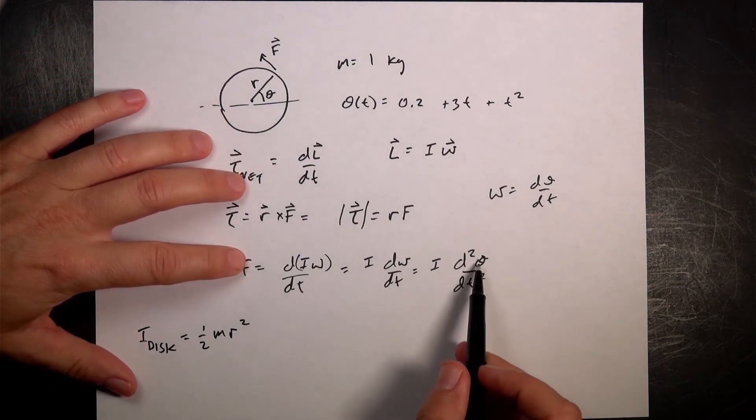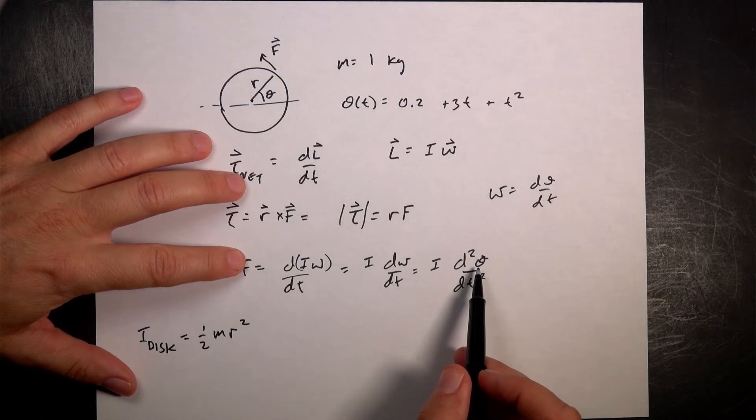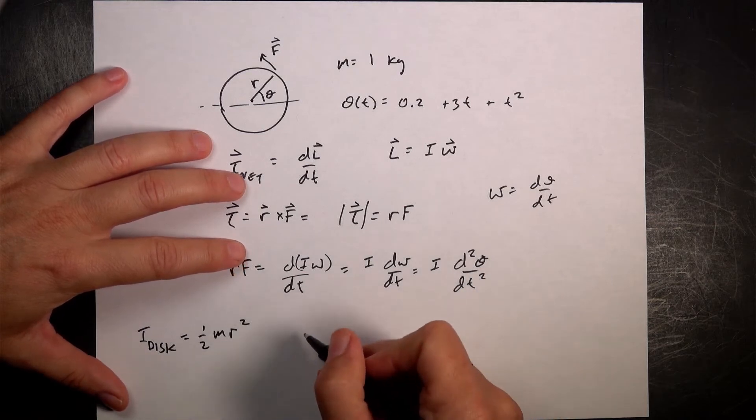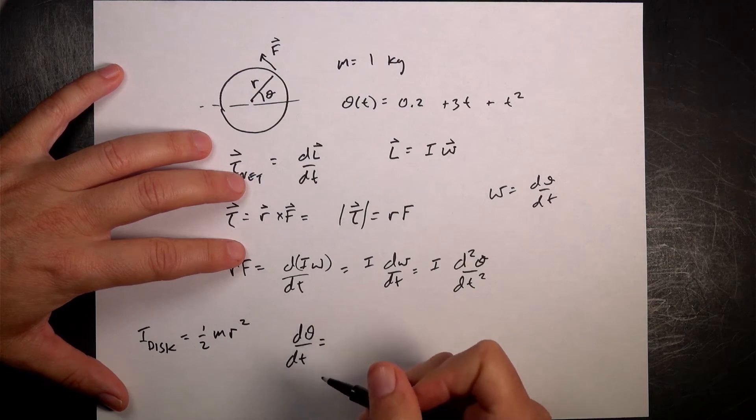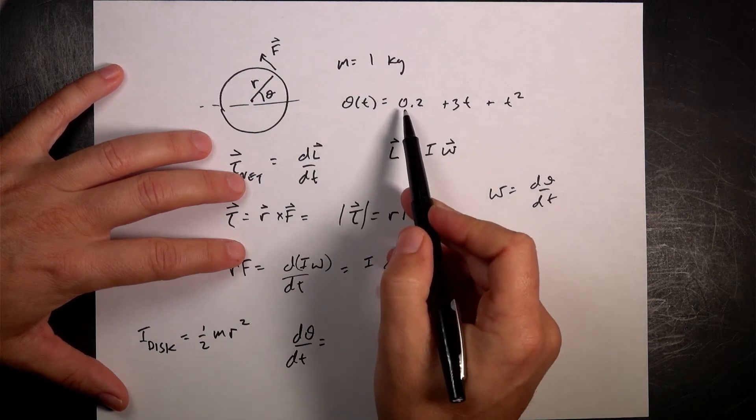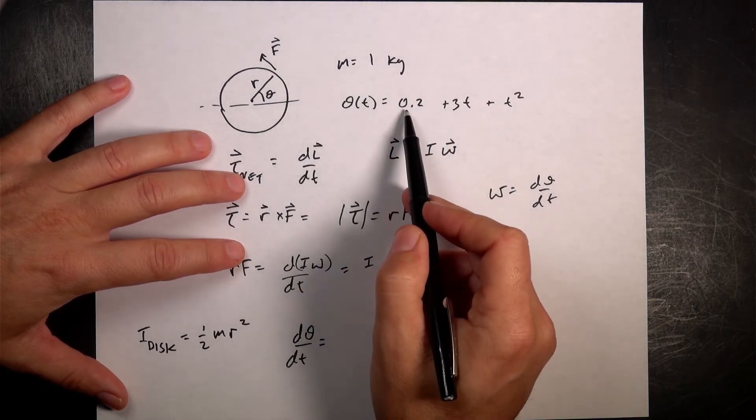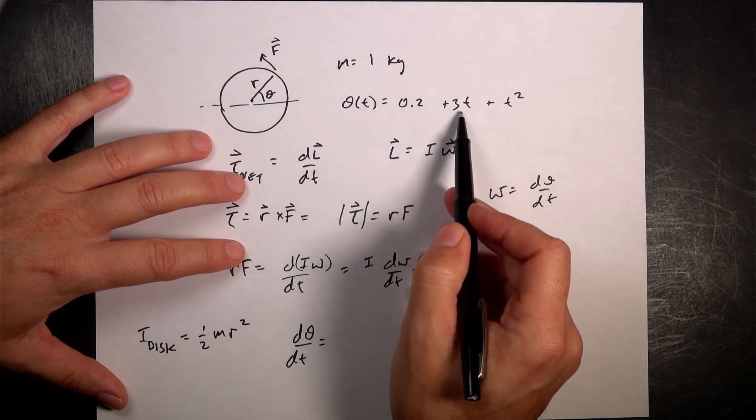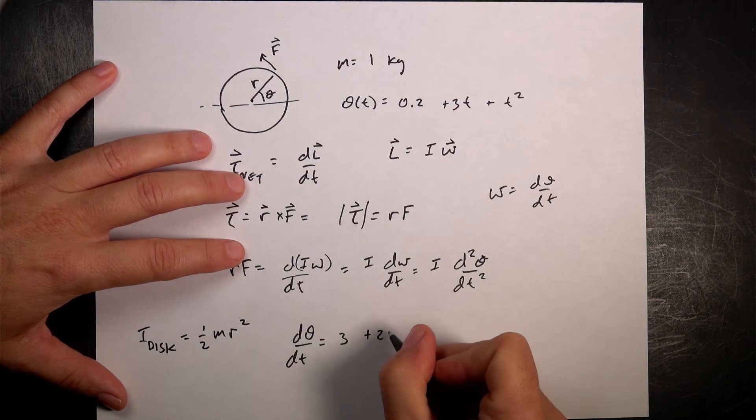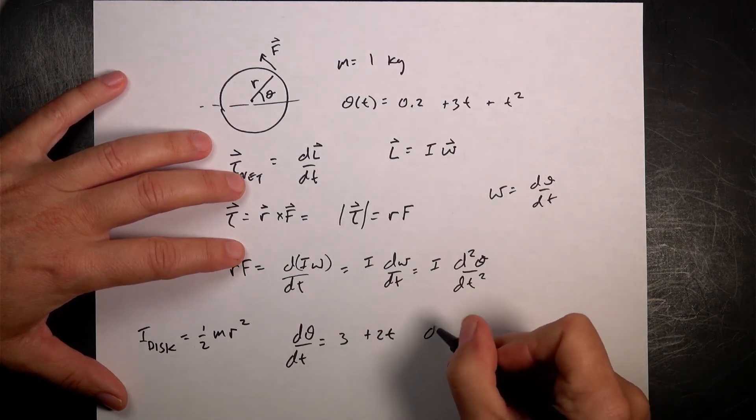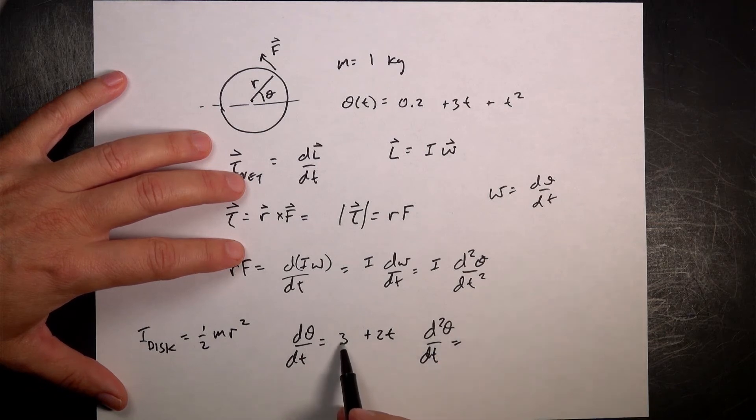There's r there. I know f. And I know theta is a function of time. So I actually can take this derivative. So let's say the first derivative of theta with respect to time is going to be equal to, I just take the derivative, right? So the derivative of 0.2 is 0. This is 3 plus 2t. Now I can take the derivative again. The second derivative of theta with respect to time. The derivative of 3 is 0. And this is 2.